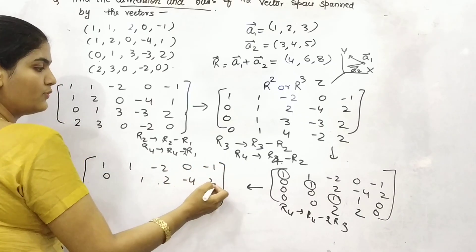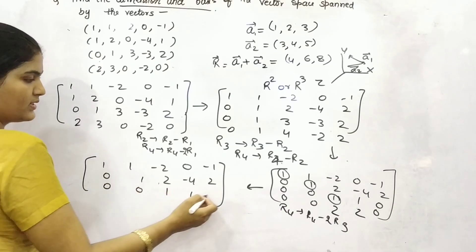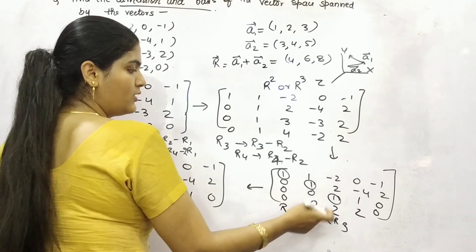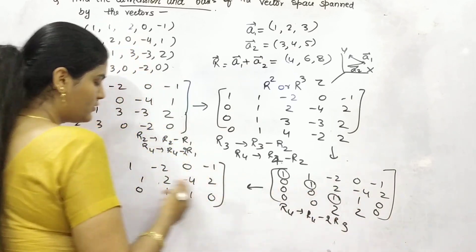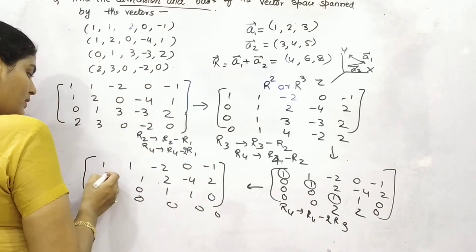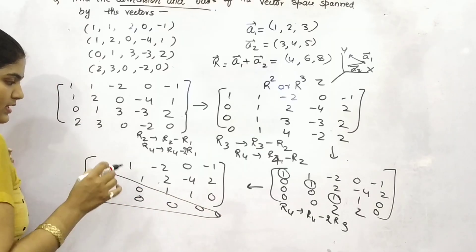0, 0, 0, 1, 1, 0. Now, for fourth, 2 minus 2 is 0, 2 minus 2 is 0, so all the elements are 0. So, this has become 0 now.